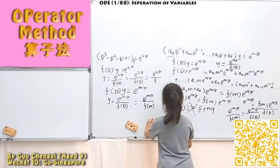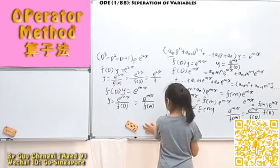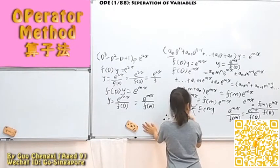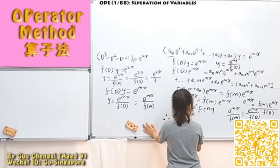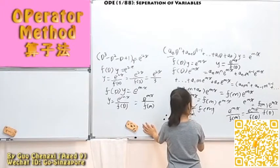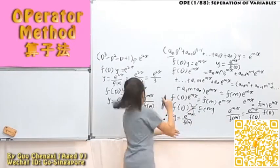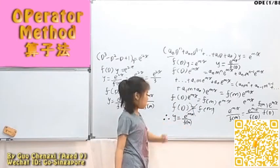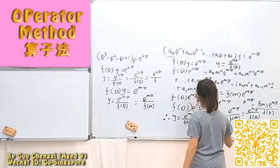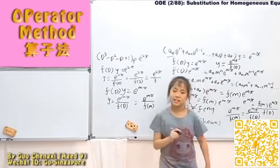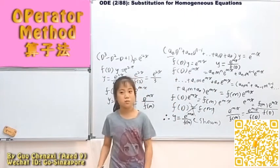So the conclusion is that y equals e to the power of Mx over F(M) like this. Okay, but wait, this is only method one. Have you got onto the next method yet? Not yet.